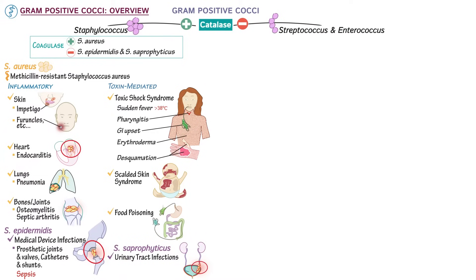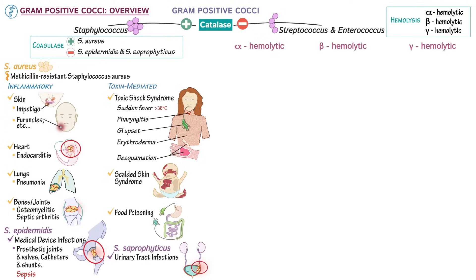Now let's learn about catalase negative gram-positive cocci. Hemolysis can be used to distinguish between species that are alpha-hemolytic, beta-hemolytic, and gamma-hemolytic. Alpha-hemolytic strains can be further distinguished by their sensitivity to optochin. Streptococcus pneumoniae is sensitive to optochin, whereas viridans group streptococci are not.